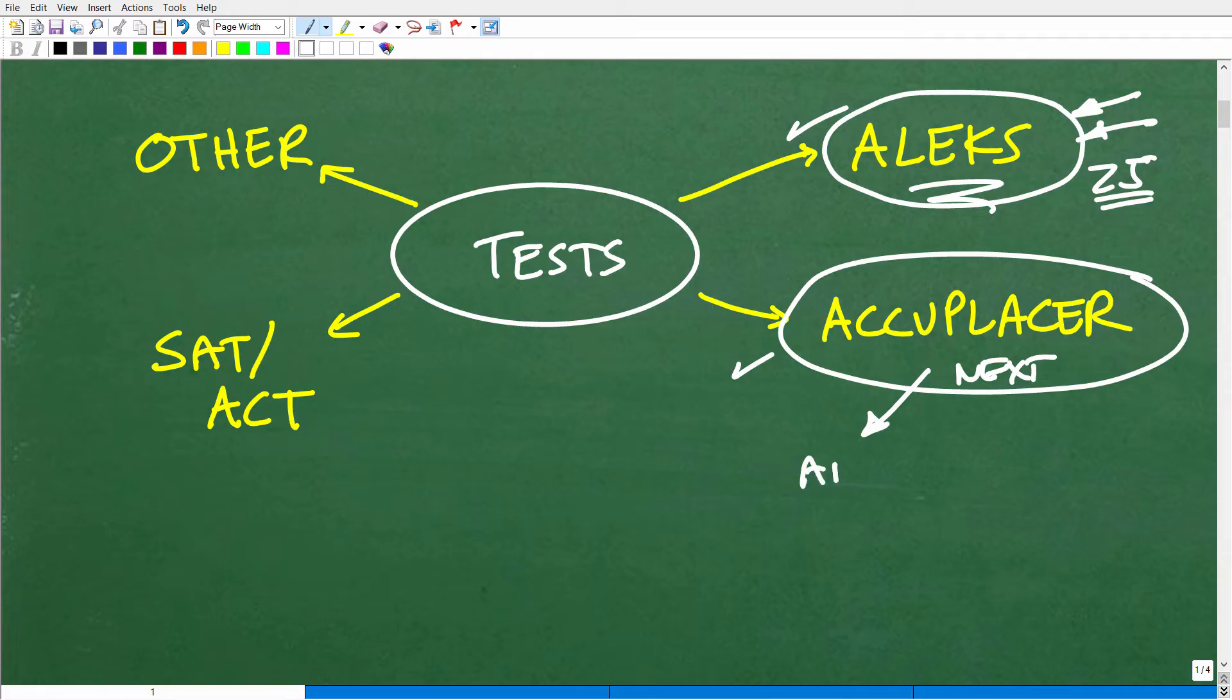There is an arithmetic level, the Accuplacer. There's another one called the QAS. And there's another one called the AAF, Advanced Algebra of Functions. This is Quantitative Algebra and Statistics, I believe is what it calls. Anyways, I have test prep courses for each one of these, okay.